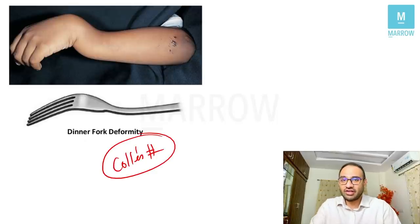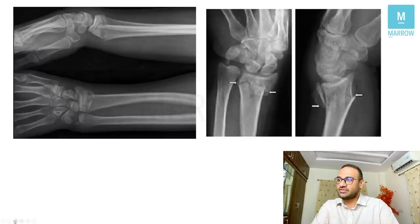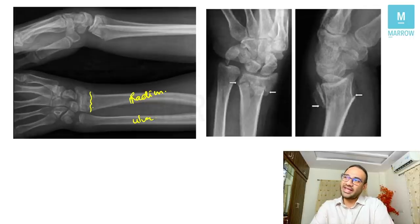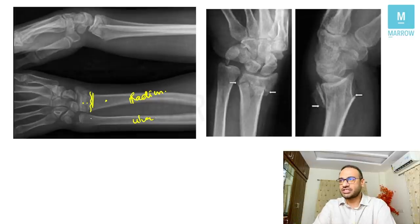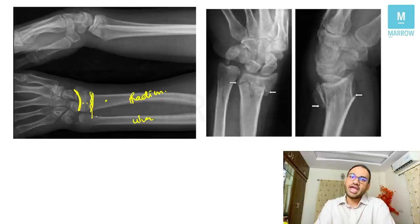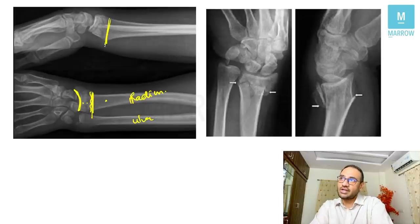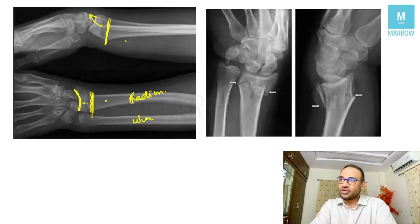Colles' fracture is an extraarticular fracture of the distal end of the radius occurring at the corticocancellous junction. On lateral view, the distal fragment is displaced dorsally; on AP view, it goes laterally (radially). The articular surface is not involved. The most common complication is stiffness of fingers, and the second most common is malunion — giving the dinner fork deformity.